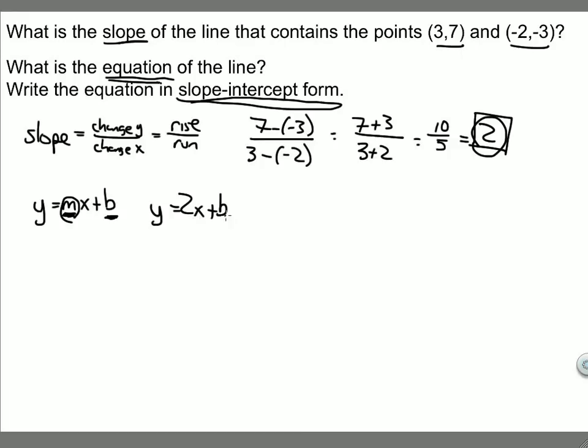Now, to find out what b is going to be, I can use substitution. I can use substitution to find out what b is going to be. Let's take the first point (3,7) and plug it in here. So I'm going to substitute (3,7).